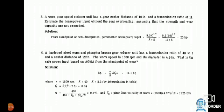Permissible horsepower input = (9.5C^1.7) / (R + 5). Here C = 10, so (9.5 × 10^1.7) / (14 + 5) = 25 horsepower.